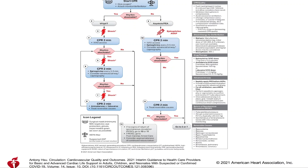Frontline healthcare providers are at significant risk for contracting respiratory illnesses due to frequent contact with symptomatic patients. Adequate PPE, including N95 mask or positive air pressure respirators, especially during aerosol generating procedures or AGPs, can reduce the risk of coronavirus transmission. Provider risk may vary based on age, ethnicity, comorbidities, vaccination status, and system factors.